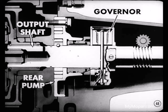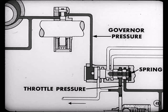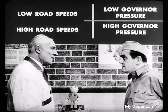Where is the governor you just mentioned, Jack? The governor is mounted on the output shaft and gets its oil from the rear pump. Oil, routed through the governor valve, will be sent to one end of the shift valve. You mean that governor pressure must be built up against one end of the shift valve to offset the throttle pressure and the spring force at the other end in order for the valve to shift? That's it exactly. And this governor pressure is controlled by the governor valve. At low road speeds, the governor pressure will be low. However, as road speed increases, governor pressure to the shift valve increases.